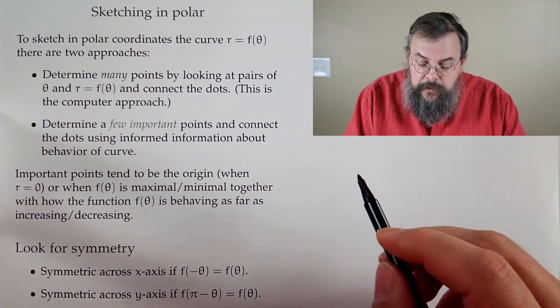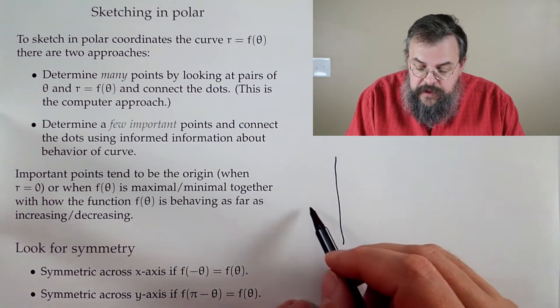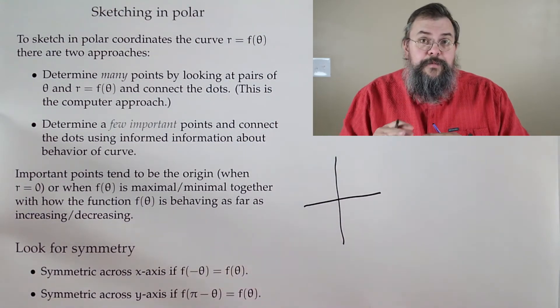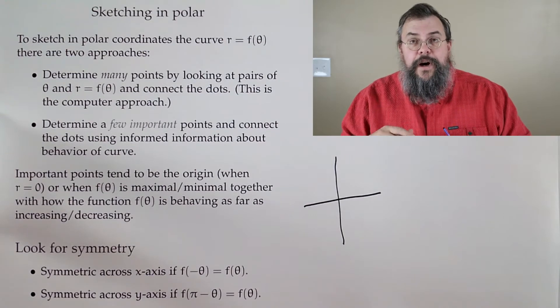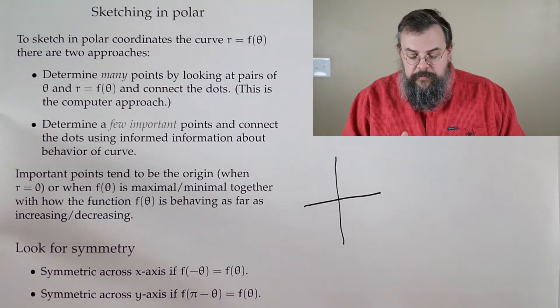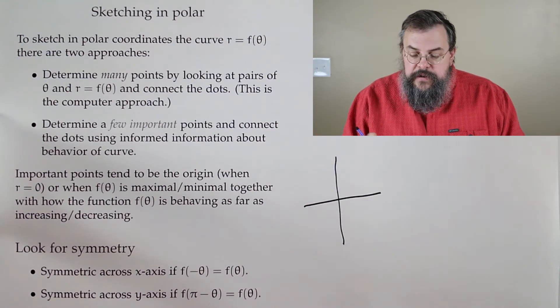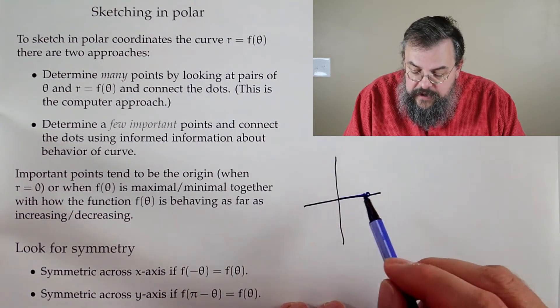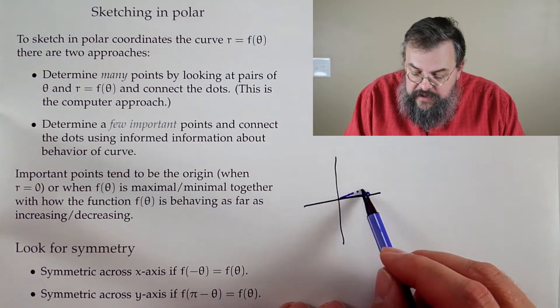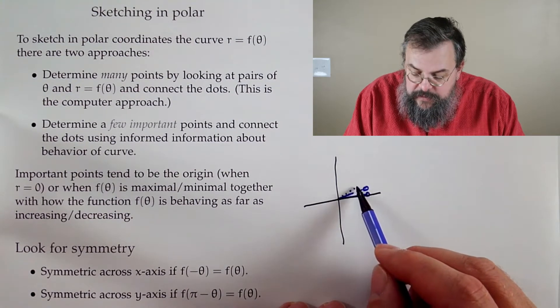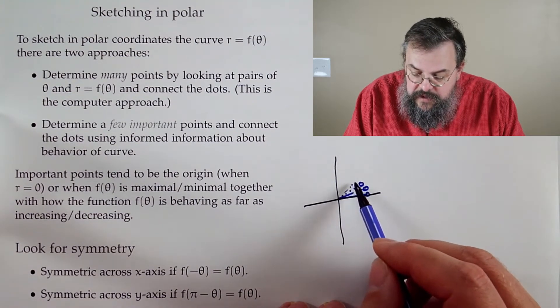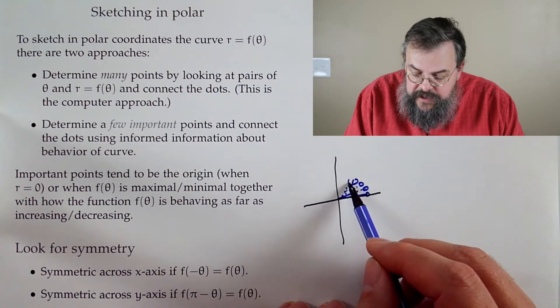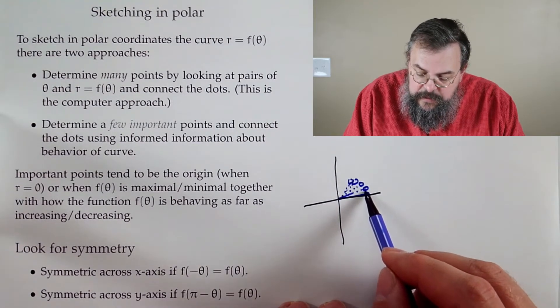How do we plot points? We have our plane here, which I'll put a little grid here. The computer would say, okay, what's happening for theta equals zero? It's coming out this far. Okay, how about for theta just a little bit above zero? It's coming out this far. And it would just keep doing this for a very long time, many choices of theta, and then we would connect the dots.